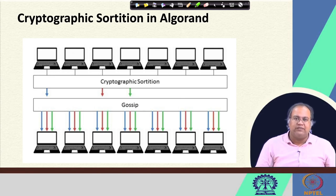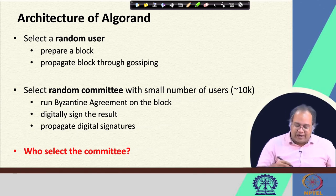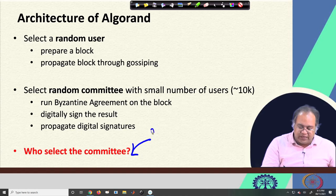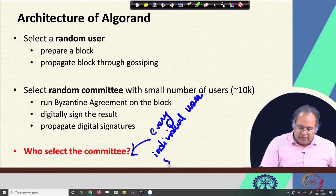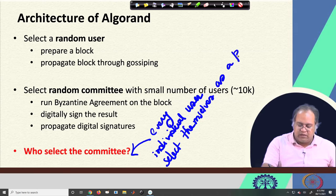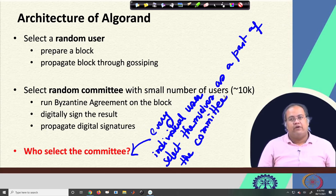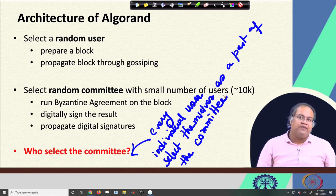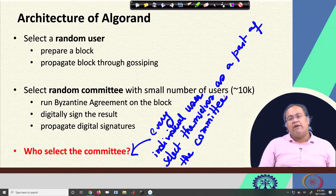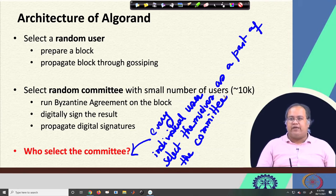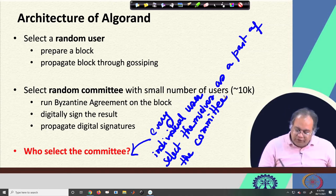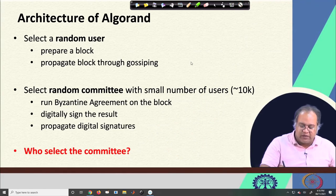What is meant by cryptographic sortition? The answer is that every individual user selects themselves as a part of the committee. This sounds interesting and strange — it means I am going to select myself as a part of the committee. Obviously, I need to prove that I am eligible to be part of the committee. To prove eligibility, Algorand uses a mechanism called cryptographic sortition.